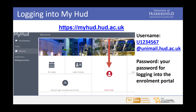To log onto MyHUD you just need to go to the web link that's shown there. Then you just need to click on the middle box that says Student Login. Your username will be your university ID number followed by at unimail.hud.ac.uk and your password should be the same as the one for your enrolment portal, or if you've changed it since you've enrolled then it'll be your new password.